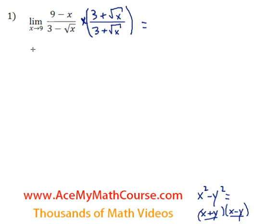Great. So where is this taking us? Well, patience, young one. Now let's multiply top, then bottom. So up top, we have 9 minus x times 3 plus root x.